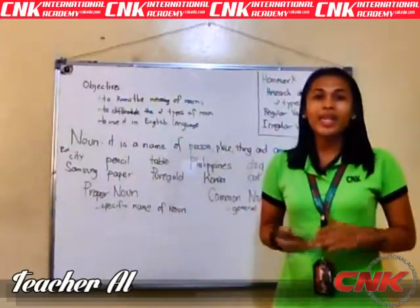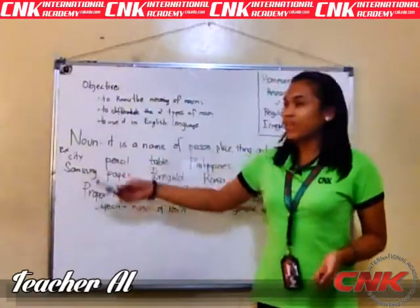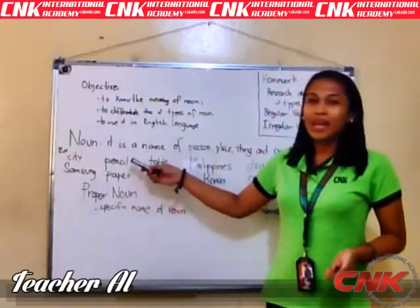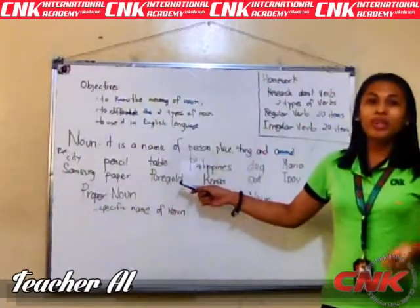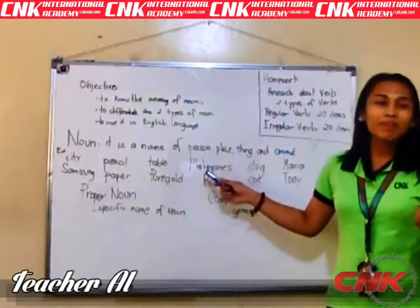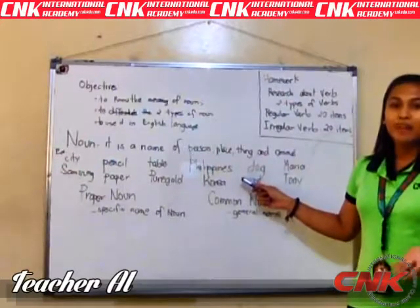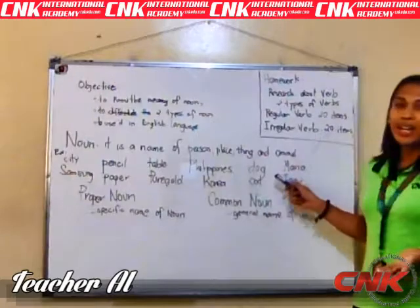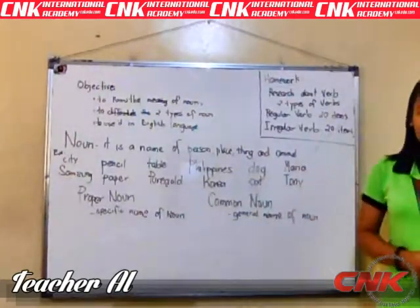I will give you examples of nouns. City is a place, Samsung is a thing, pencil is a thing, paper is a thing, table is a thing. Pure Gold is a supermarket — it is a place. Philippines is a place because it is a country. Korea is a place, dog is a name of an animal, cat is also a name of an animal, Maria is a name of a person, and Tony is a name of a person.